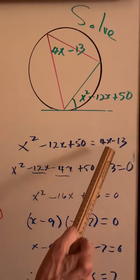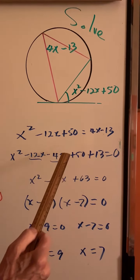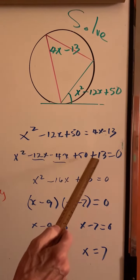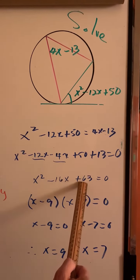Now we can solve the equation, seeing that we understand what it means. Transpose to 4x. Transpose to 13. Collect like terms 16. Collect like terms 63.